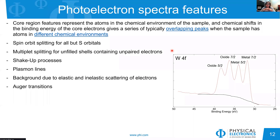Let's look at the features that contribute to the spectra. The main contribution is what we try to extract — the chemical environments, which contribute via different, possibly overlapping peaks. For example, here we have tungsten 4f for tungsten oxide, with metal peaks and oxide peaks — two chemical states we know for this material. In addition, we can have spin-orbit splittings for all but s orbitals, so we have 7/2 and 5/2 splitting for both metal and oxide components of the 4f orbital.